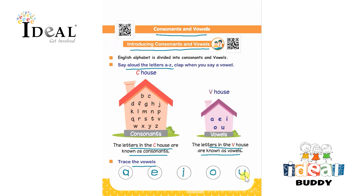Consonants and vowels have been introduced. You can give the child some spellings to identify the vowels in — like head, eye, home. Give them such words where they can identify the vowels. Thank you.